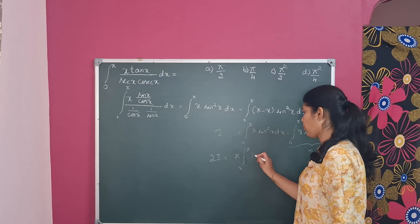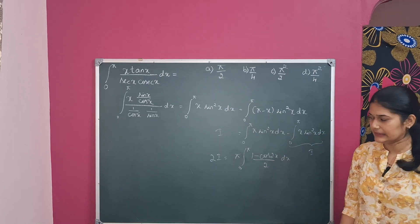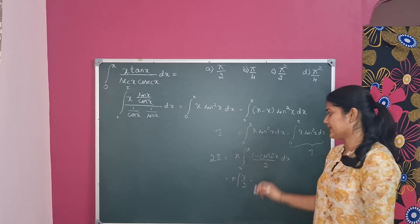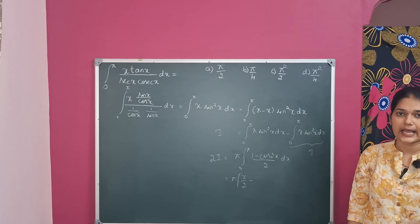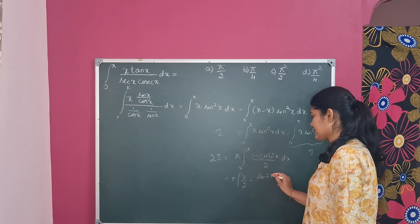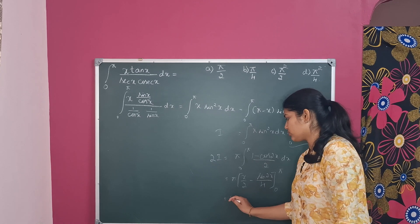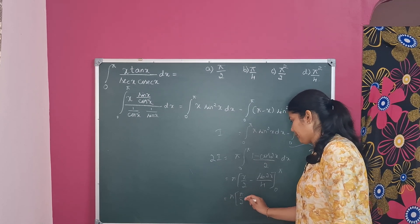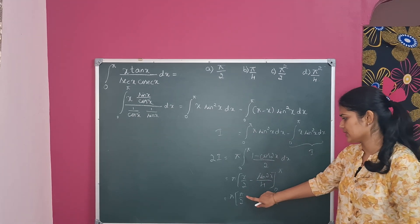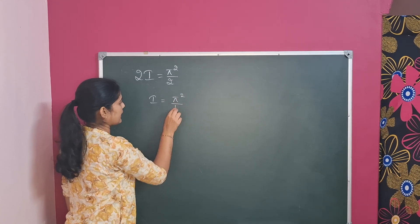We write sin²(x) as (1 minus cos 2x)/2 dx. The integral becomes π times (1/2) times [x/2 minus sin(2x)/4] from 0 to π. Substituting the value, we get π times (π/2 minus sin(2π)/4). Since sin(2π) equals 0 and both terms at 0 are 0, we get 2i equals π²/2. Therefore, i equals π²/4 and the answer is option D.